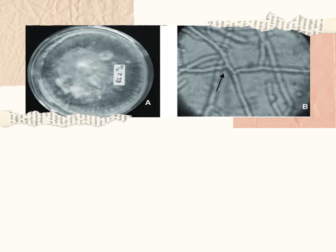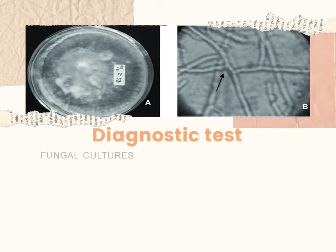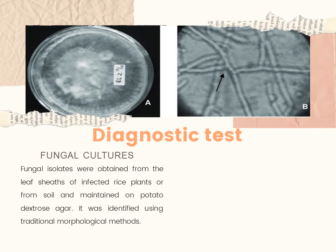Now I will explain the materials and methods for diagnostic tests. First is fungal cultures: fungal isolates were obtained from the leaf sheaths of infected rice plants or from soil and maintained on potato dextrose agar. They were identified using traditional morphological methods.